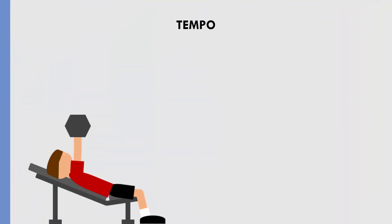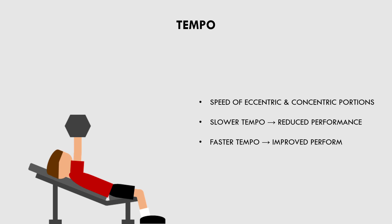Another factor which can influence lifting performance is tempo. Tempo refers to the speed of both the eccentric and concentric portions of the lift. If we lift with a slower tempo, performance is generally lower than if we performed a lift with a faster tempo. However, for hypertrophy training, we generally want each repetition to be controlled so that we are maximizing tension on the target muscle and minimizing elastic recoil from the stretch shortening cycle. So if a trainee changes their tempo, this may influence the weight used or the repetitions performed.